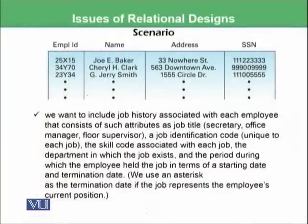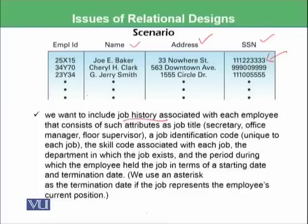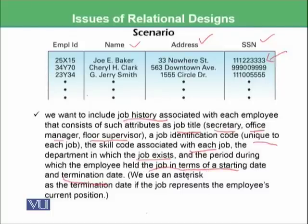So let's have a scenario. We have employee ID, employee name, address, and social security number. This is one relation that is perfect because each tuple denotes one particular employee. Now we want to include the job history of each employee, which consists of attributes such as job title, secretary, office, manager, floor supervisor, a job identification code unique to each job, the skill code associated with each job, the department in which the job exists, and the period during which the employee held the job in terms of a starting date and termination date. We use 'static' as a termination date if the job represents the employee's current position.